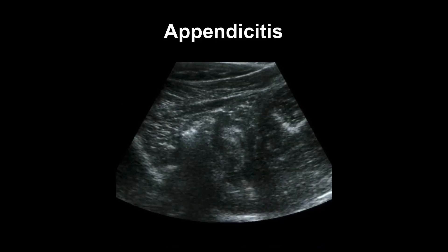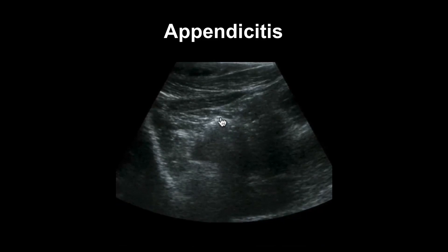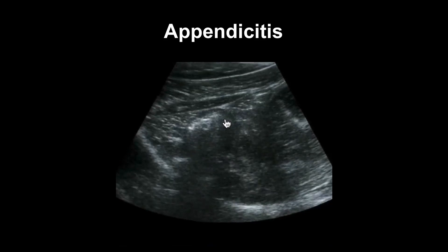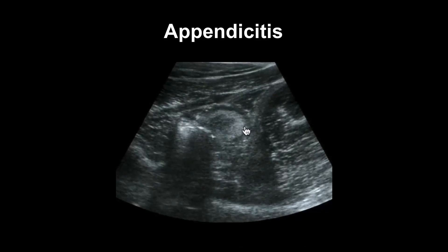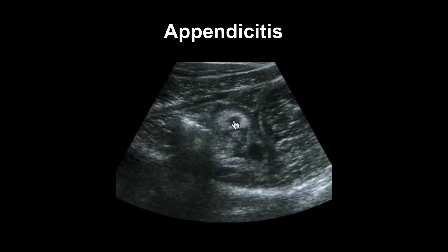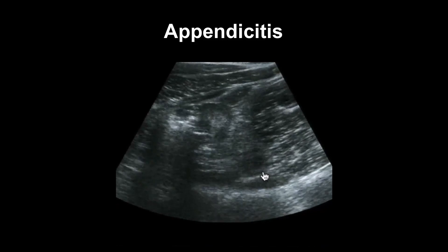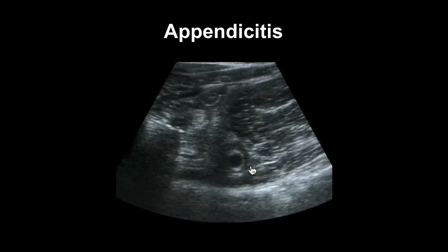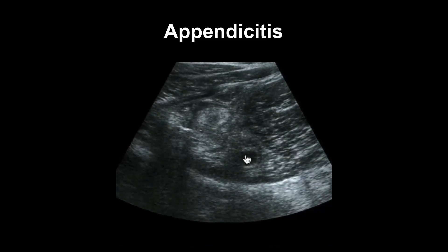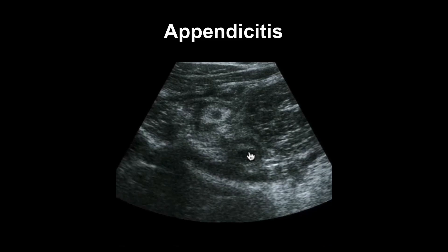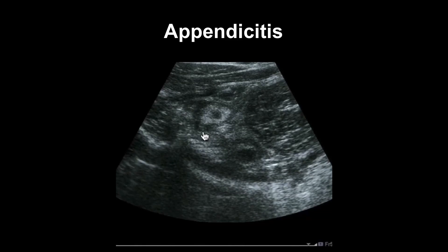In this video we see what appendicitis looks like. We see the cecal pole here, and there is a hyperechoic round structure leaving the cecal pole and a dilated tube-like structure ending here. This is the inflamed dilated appendix. You can also see that the fat structures around here are stranding, and when we measure the appendix it has 12 mm.